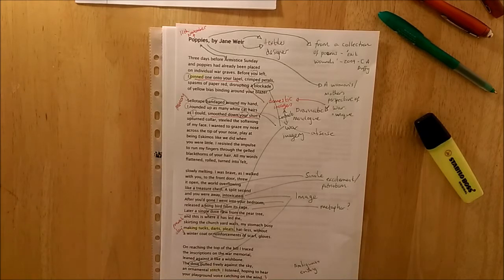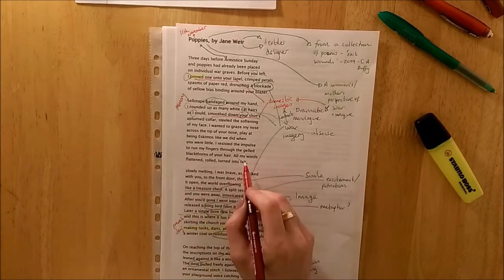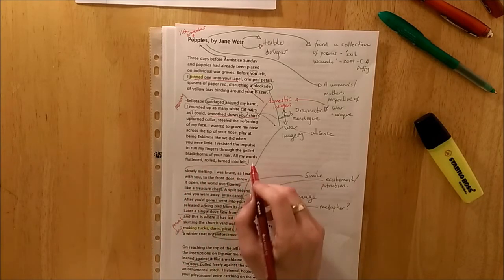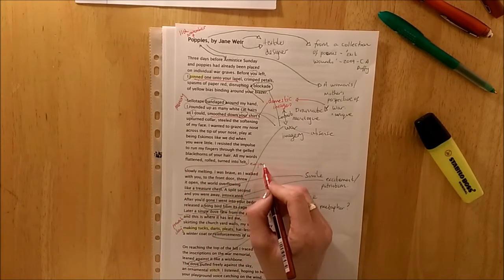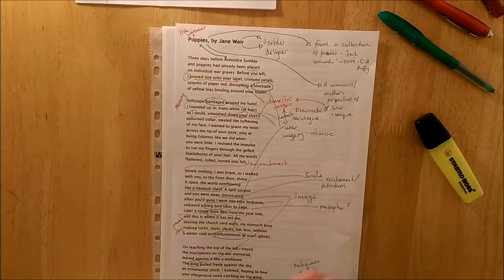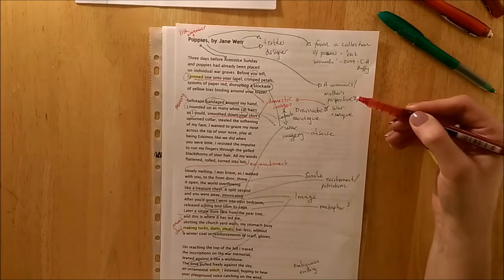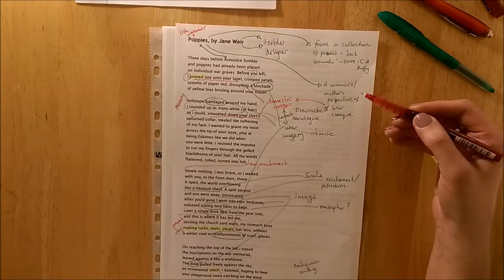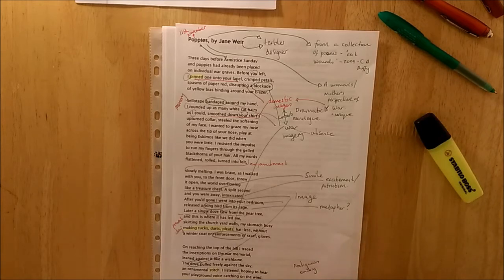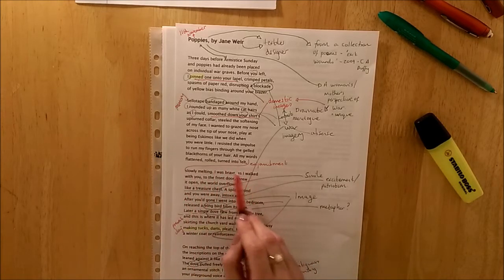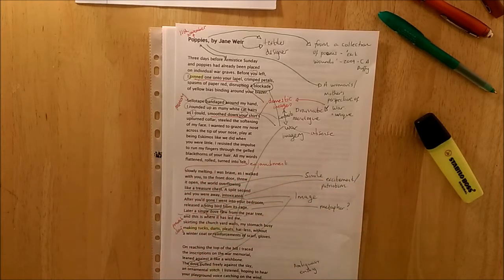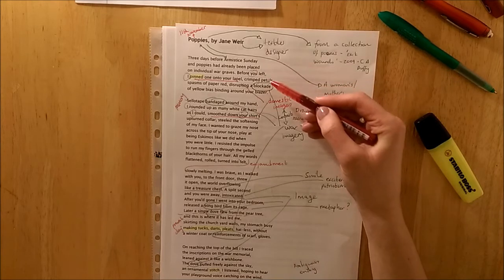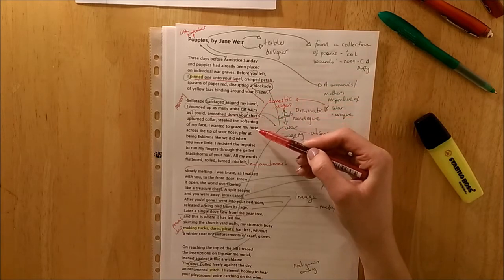There are also other structural features. There's lots of enjambment. Here. For sure. Throughout the two stanzas. And the effect here for me is it increases the pace. And it definitely adds to this sense that it is a mother retelling her story. Retelling her truth about the effects of war. You could also argue as well that the break here in the line. The physical space between them. Could reflect a breakage within the mother.